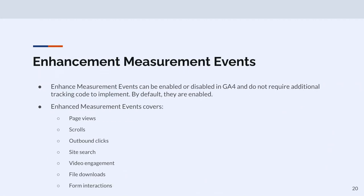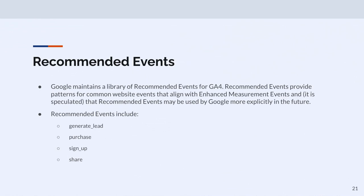Enhanced measurement events are turned on by default and cover page views, scrolls, outbound link clicks, site search use, video engagement, file downloads, and form interactions. They cover them in a way that suits Google — it may not suit you. Recommended events cover a lot of other things: a lot of e-commerce stuff, sign-ups, social shares, lead capture, and there's a lot of gamification stuff. If you haven't looked through recommended events, I encourage you to spend some time on that and see what suits your organization.